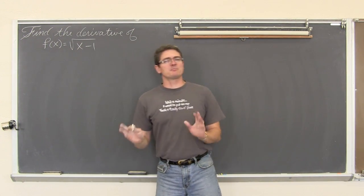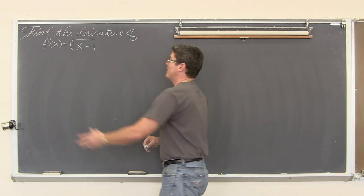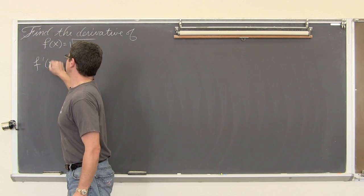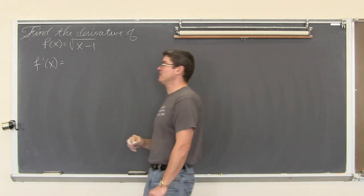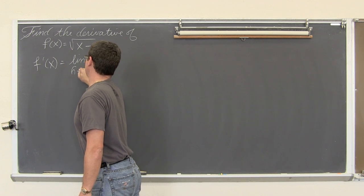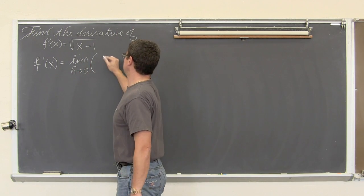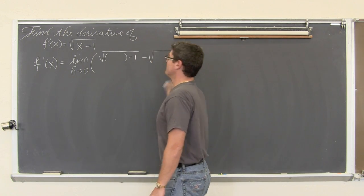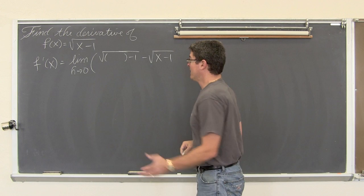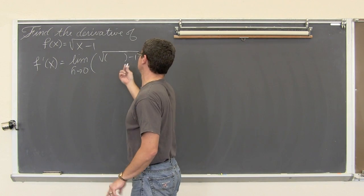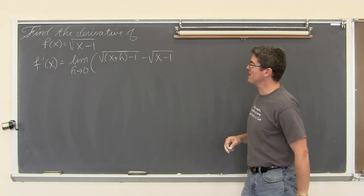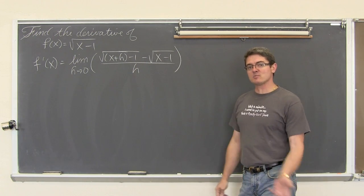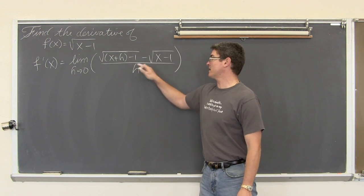Last example. The function has the square root symbol in it, so I am probably going to have to rationalize the numerator as I find the derivative. Find the derivative of f of x equals the square root of x minus 1. The derivative of a function is equal to the limit as h approaches zero of f of x plus h — so the square root of something minus 1 — minus f of x, just copy the function down. The f of x plus h is: take out the x, plug in x plus h.